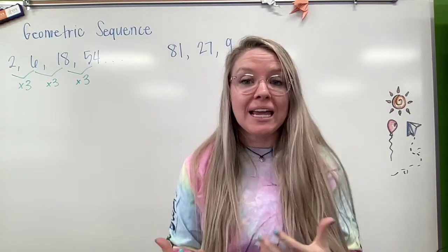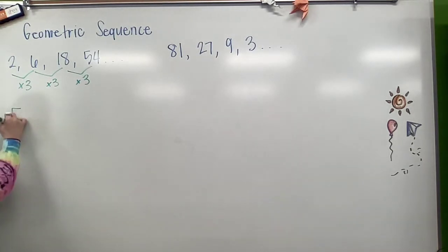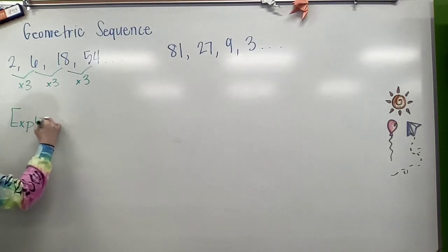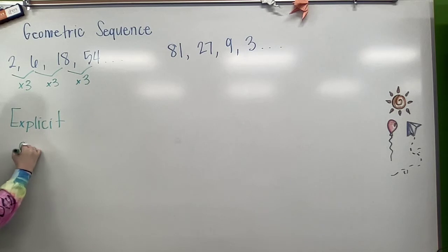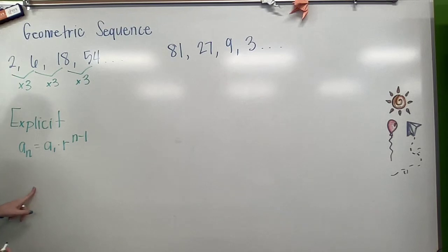It is multiplying each step. The explicit formula for this is always going to follow the pattern, a sub n equals a sub 1 times r to the n minus 1.